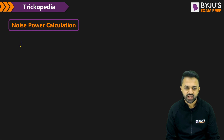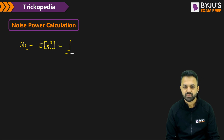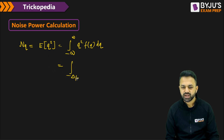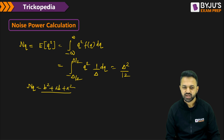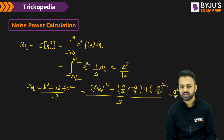To calculate the noise power, we compute the mean square value of the quantization error: the integral from minus delta by 2 to plus delta by 2 of q squared times (1/delta) dq. After solving this you get delta squared by 12. Alternatively, using the formula (b² + ab + a²)/3, with b = delta/2 and a = minus delta/2, you also get delta squared by 12.